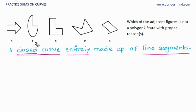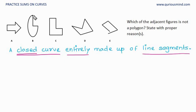Let's look at B. Is it a curve? Yes. Is it a closed curve? Yes, it is a closed curve. But is it entirely made up of line segments? No. We see that this region, which we are coloring now, is not made up of line segments. And therefore, B is not a polygon.